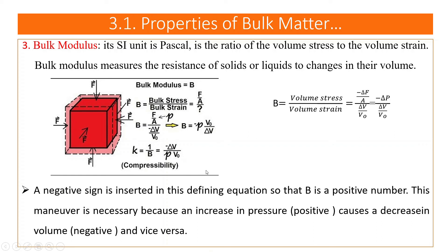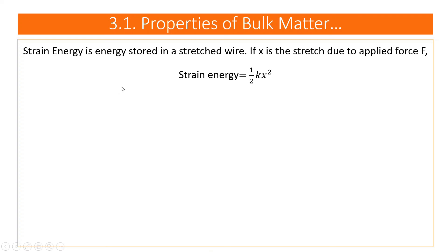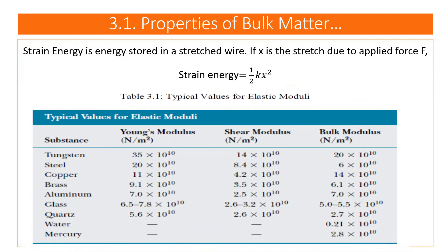From the bulk modulus, it is also possible to find compressibility. Strain energy stored in a stretched wire equals ½kx². A table lists typical values of Young's modulus, shear modulus, and bulk modulus for different materials — for example, Tungsten has a Young's modulus of 35×10¹⁰ N/m².